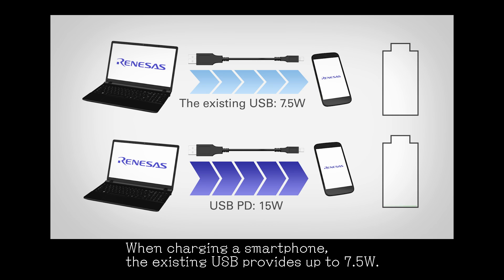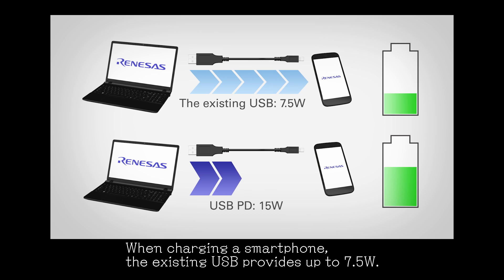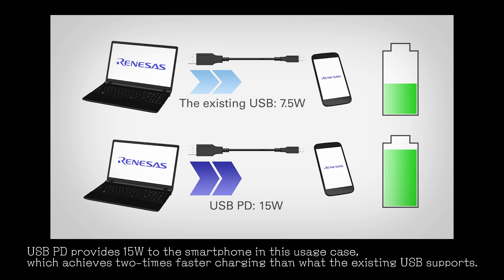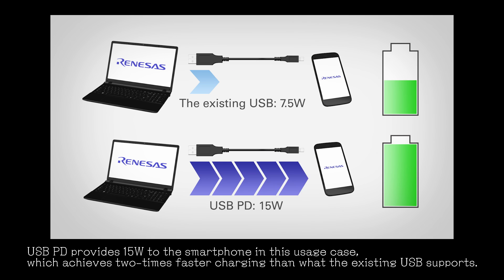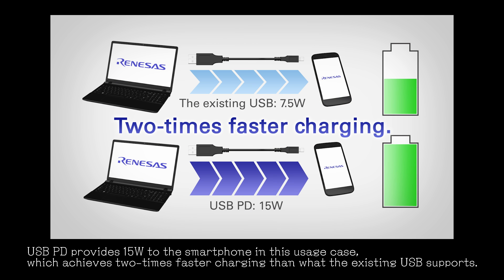When charging a smartphone, the existing USB provides up to 7.5 watts. USB PD provides 15 watts to the smartphone in this usage case, which achieves two times faster charging than what the existing USB supports.